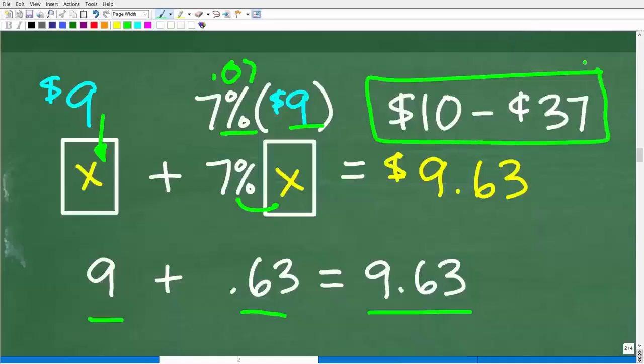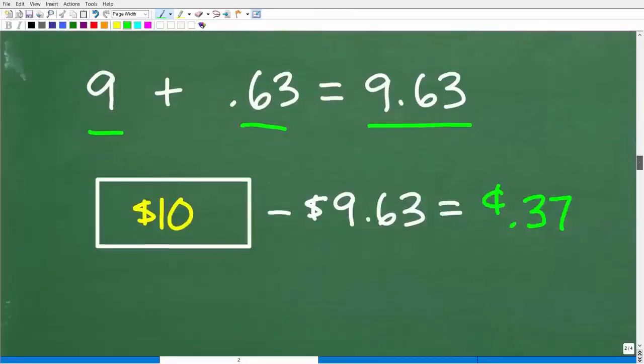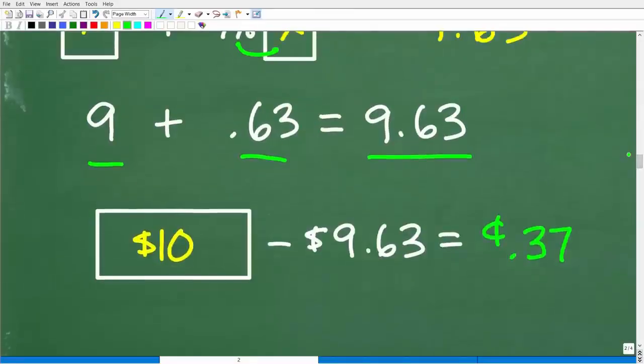And of course, that is the difference between giving the cashier $10 and getting back 37 cents in change. So effectively, we could just kind of think of it this way. We went up to the cashier stand and the cashier said, that would be $9.63. No problem. I'm going to give you $10 and you're going to get back 37 cents in change.